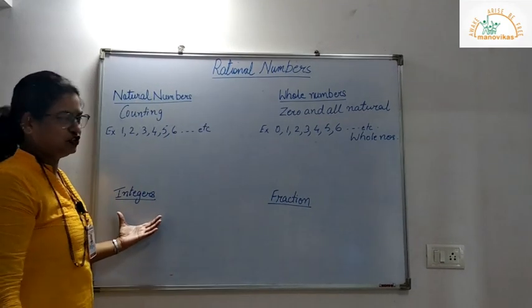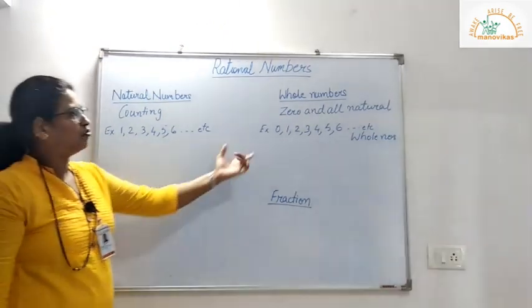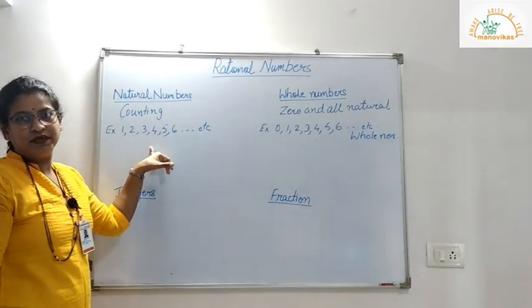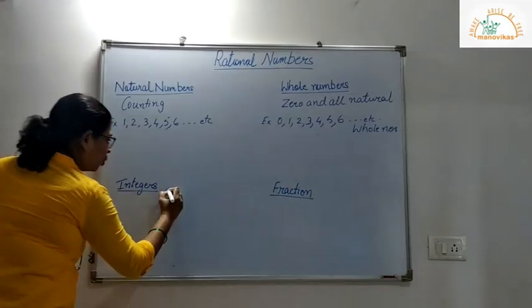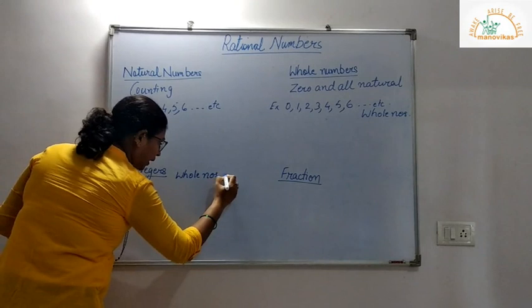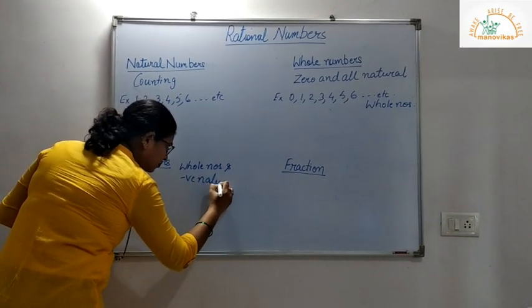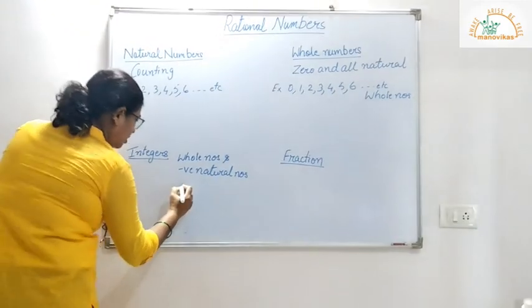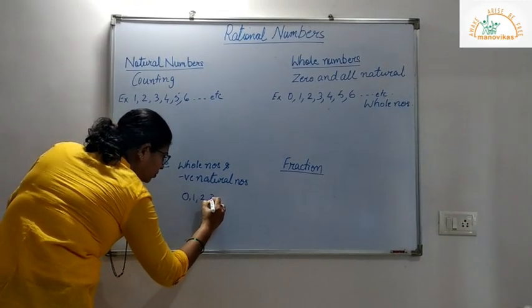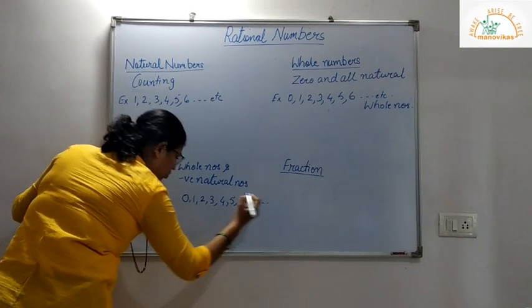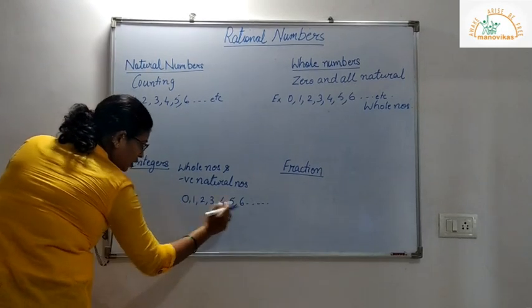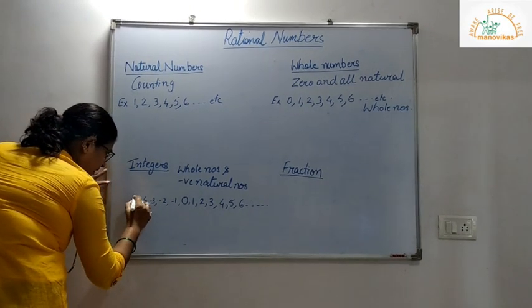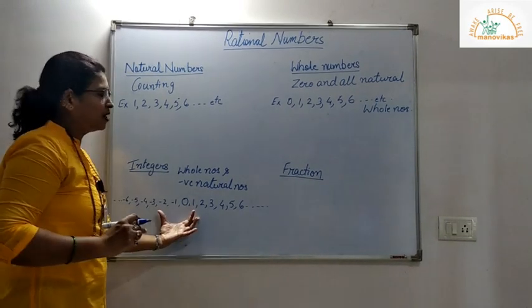Now moving on to integers. Whole numbers and the negative of natural numbers are called as integers. So we have our whole numbers 0, 1, 2, 3, 4, 5, 6, and so on, and we have the negative of natural numbers: minus 1, minus 2, minus 3, minus 4, minus 5, minus 6, and so on. These are called as integers.